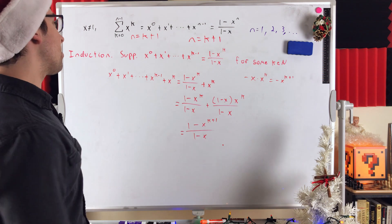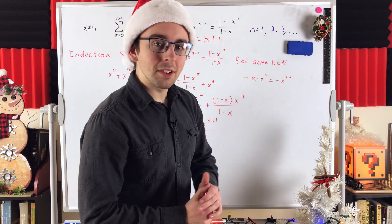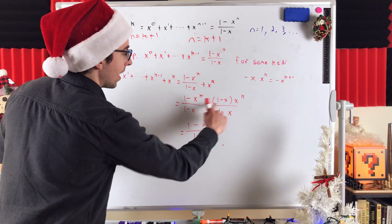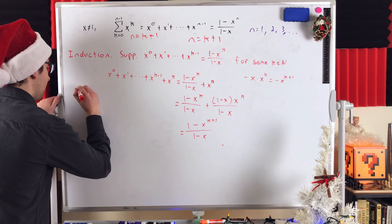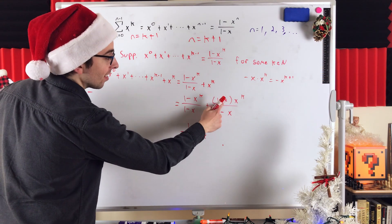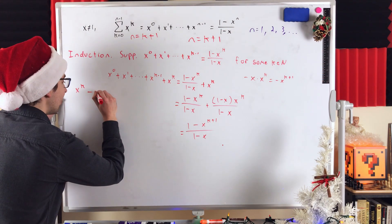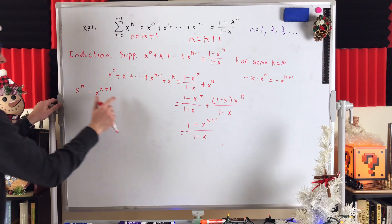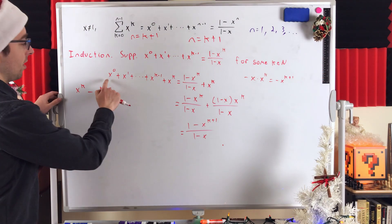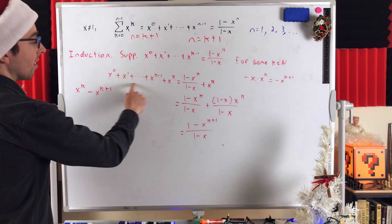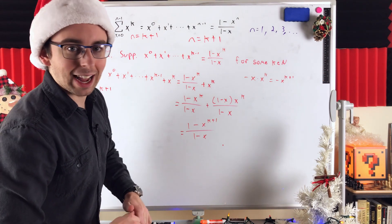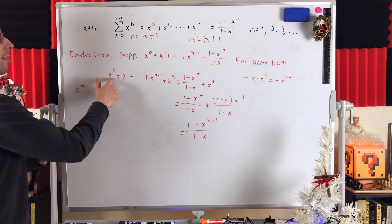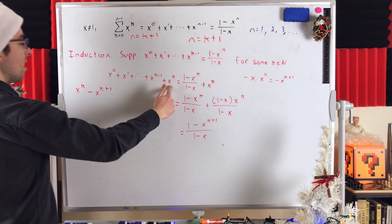That's our result — that's the induction step. We've proven this equality for all real numbers besides 1. Just to reiterate: expanding the multiplication gives 1 times x to the k, that's positive x to the k, minus x times x to the k, that's x to the k plus 1, so positive x to the k cancels with negative x to the k, leaving 1 minus x to the k plus 1. The left-hand sum is the sum of the first k plus 1 powers of x — from x to the 0 up to x to the k, that's k plus 1 powers.